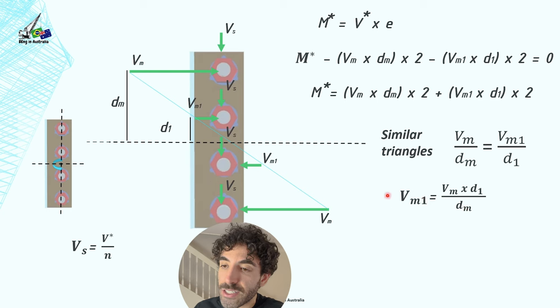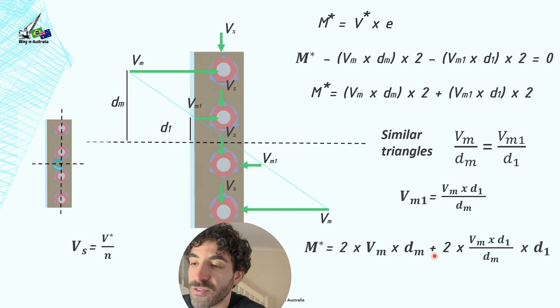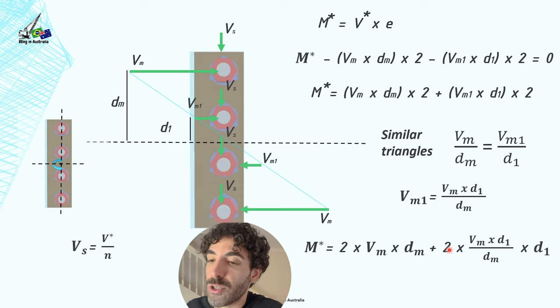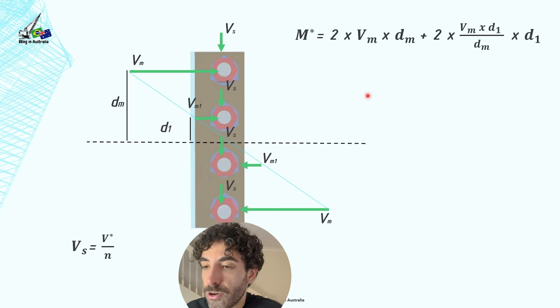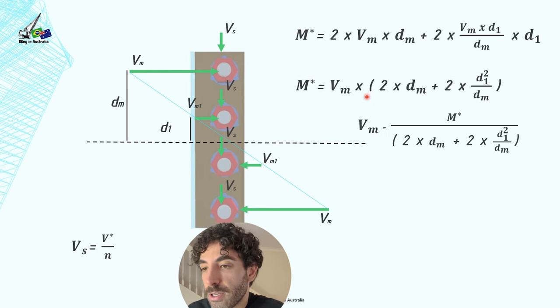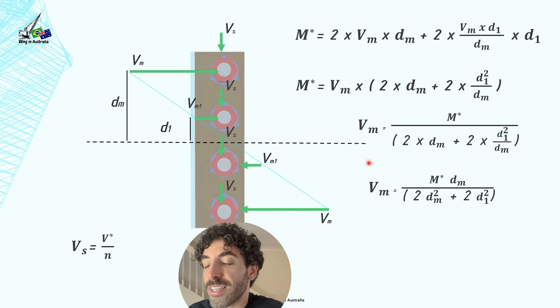Substituting this equation here on this one here, we get that M* is 2V_m·d_m plus 2 times V_m·d_1 divided by d_m times d_1. And a little bit of arithmetic, let's just jump straight to the final formula. You can stop the video and go through these calculations. We get that the force, the shear force due to the bending moment is equal to the bending moment, M*, times d_m, which is this distance here, divided by 2d_m² plus 2d_1². So that's the formula you need to know in order to design this side plate shear connection.